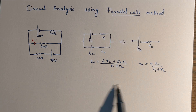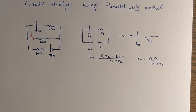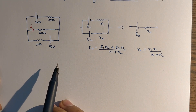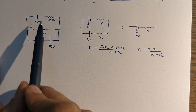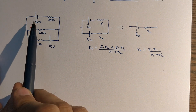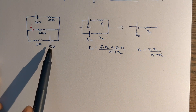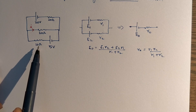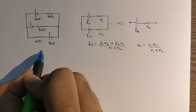We'll take up the derivation in another video. Let's see the application in this particular question. We have to find the current in one branch. Whenever such a situation arises, you can take the other two branches and club them as if two batteries are there. Here, one battery has a certain EMF and internal resistance, and the other is 5 volts with 10 ohms internal resistance.